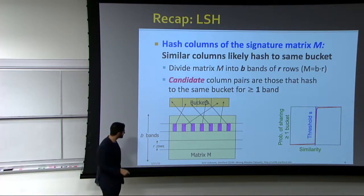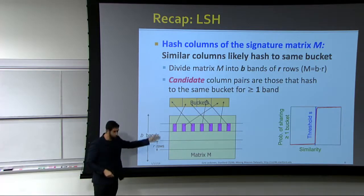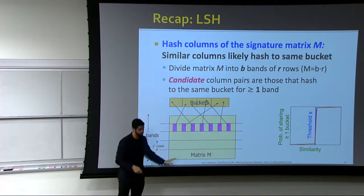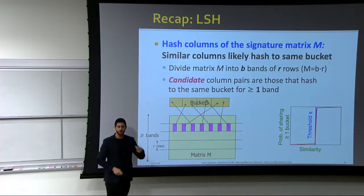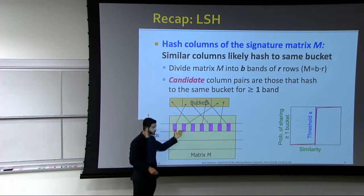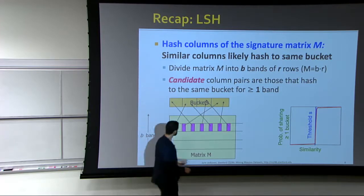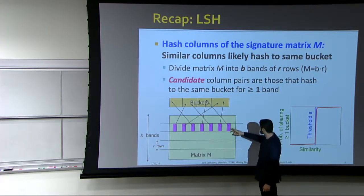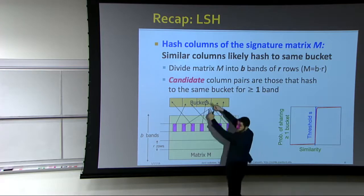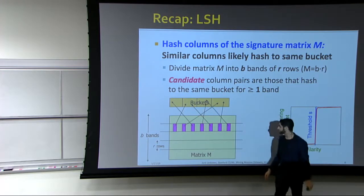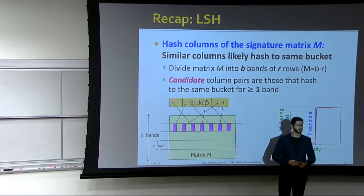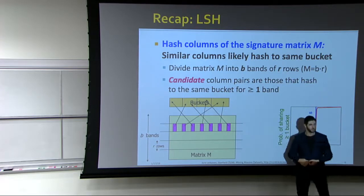Rather than comparing just two columns, we subdivide our space into bands. We consider a candidate pair if it matches on at least one band. For example, documents seven and four hashing into the same bucket become candidates for similarity checking. Documents six and seven hashing into different buckets will never be compared.